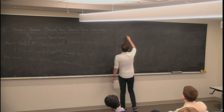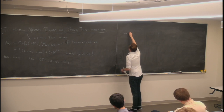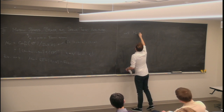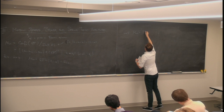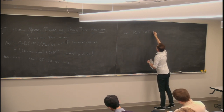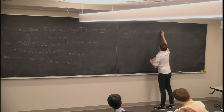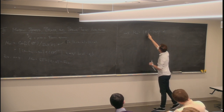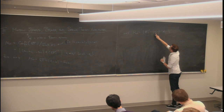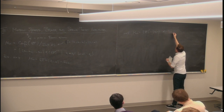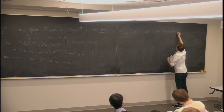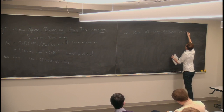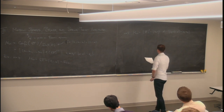Let's give another example: n equals 5. The simplest generalization is M_{0,5}, which equals CP^1 squared minus some removed locus. In particular, we remove all places where z_2 can collide — this is parametrized by z_2 and z_3. We remove points where z_2 collides with any of 0, 1, infinity, as well as the diagonal where z_2 collides with z_3.